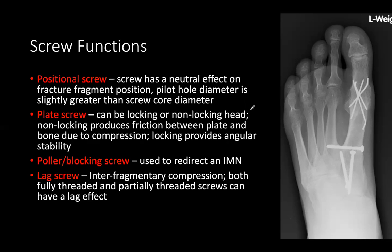Looking at this image, the two screws crossing the first tarsal joint are fusion screws likely placed by lag technique. The screw going from the first to the second ray is probably a positional screw — sometimes after fusion there's a little more spring at the 1-2 intermetatarsal angle, and you want to hold that down with a positional screw or a clamp.